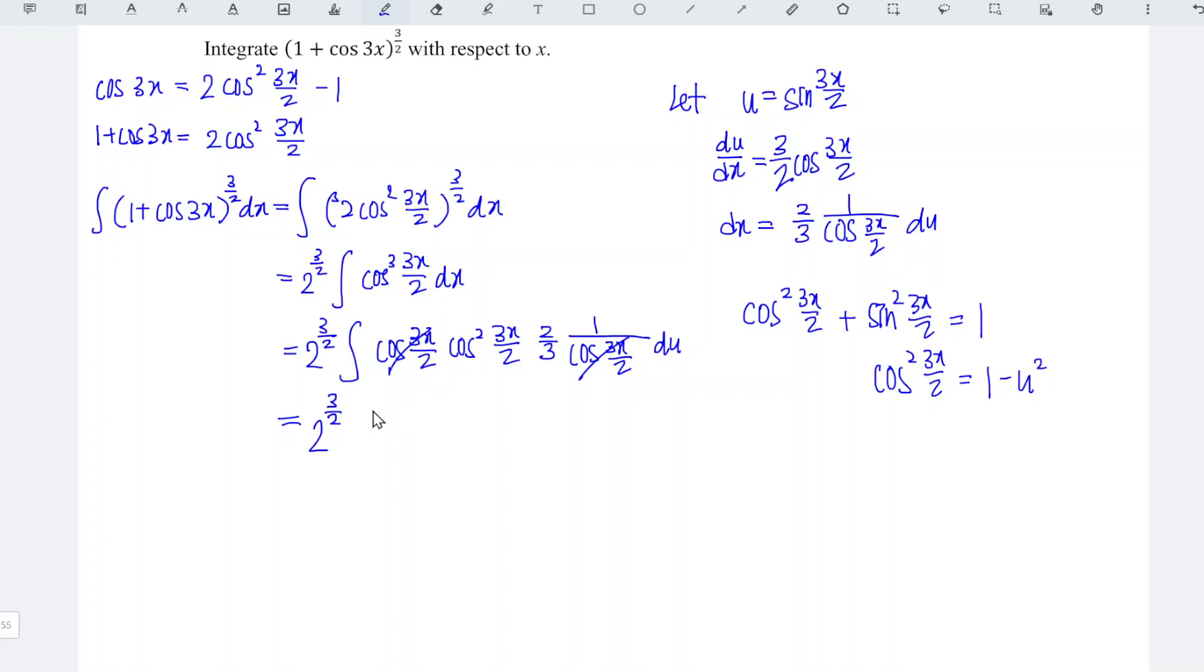So we can now replace. Take out the constant first, 2 over 3, and integrate 1 minus u squared du.